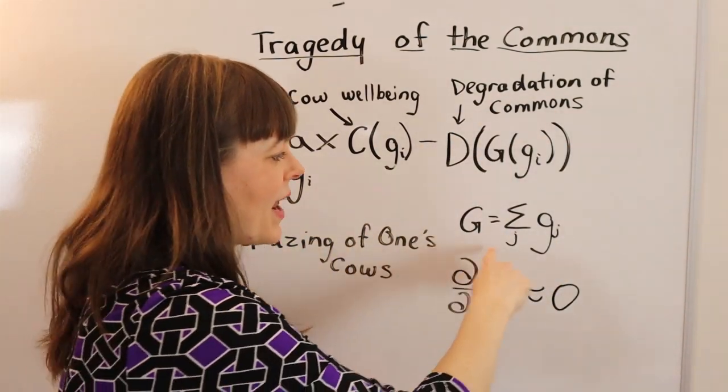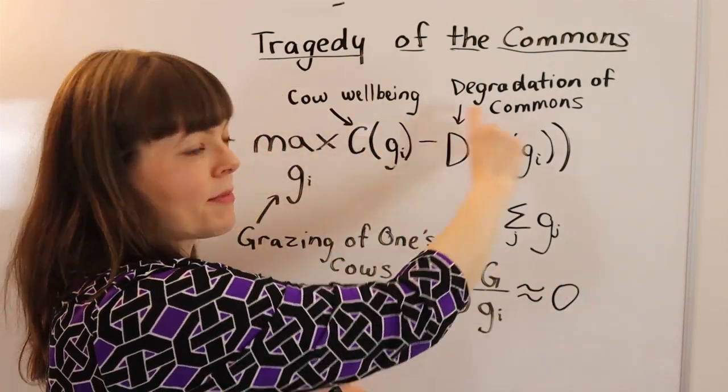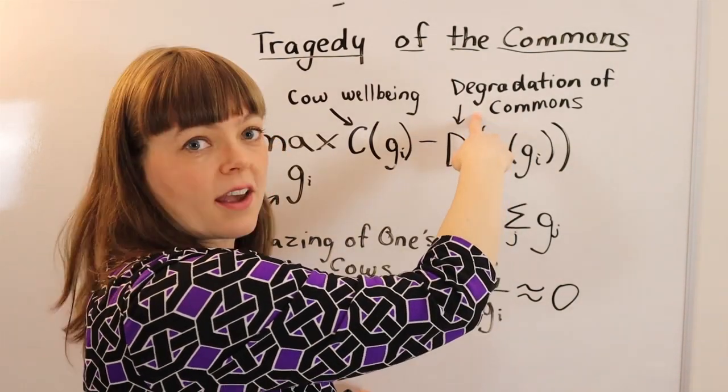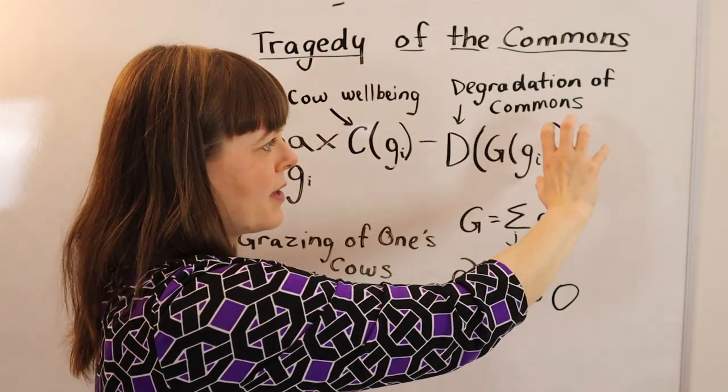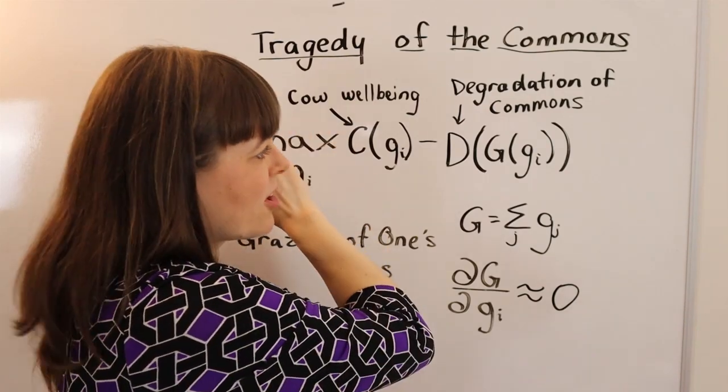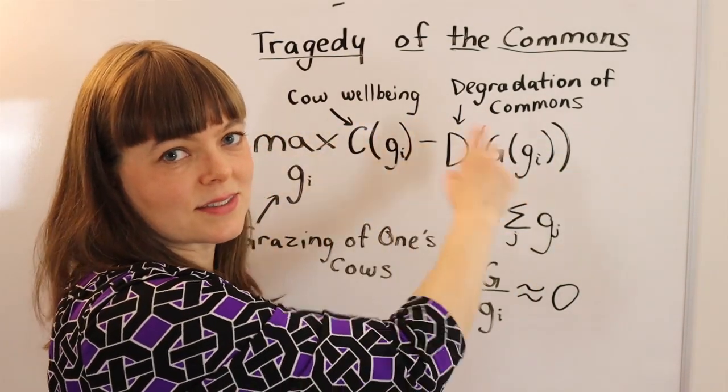However, when you add up everybody's behavior in total when they optimize this thing, you get a huge effect on the degradation of the commons, such that the cost becomes big not because of your individual behavior, but because everybody is making this same decision.